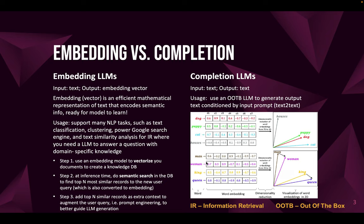First, we need to be clear: there are two general types of large language models — one for the purpose of embedding, and the other for the purpose of completion. For embedding models, the input is text and the output is an embedding vector — an efficient mathematical representation of written text that includes semantic information and meaning, ready for machine learning models to learn.